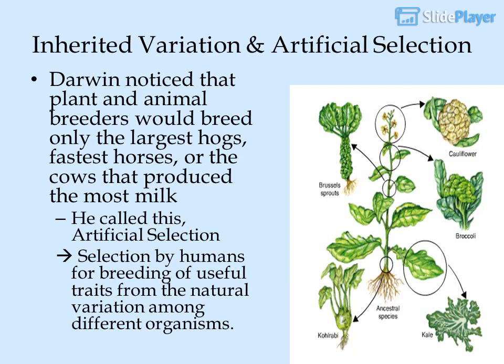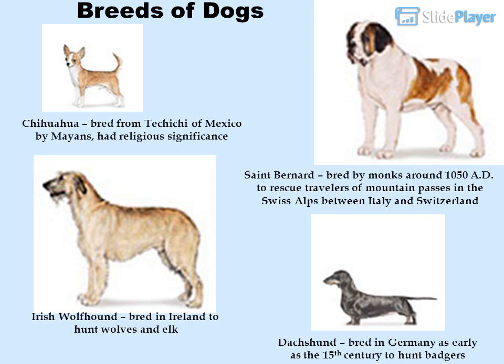Darwin proposed a mechanism for evolution called natural selection, beginning with inherited variation and artificial selection. He noticed that plant and animal breeders would breed only the largest hogs, fastest horses, or cows that produced the most milk — he called this artificial selection: selection by humans for breeding of useful traits from natural variation. Examples of dog breeds include the Chihuahua, bred by Mayans in Mexico with religious significance; the St. Bernard, bred by monks around 1050 AD to rescue travelers in the Swiss Alps; the Irish Wolfhound, bred in Ireland to hunt wolves and elk; and the Dachshund, bred in Germany as early as the 15th century to hunt badgers.